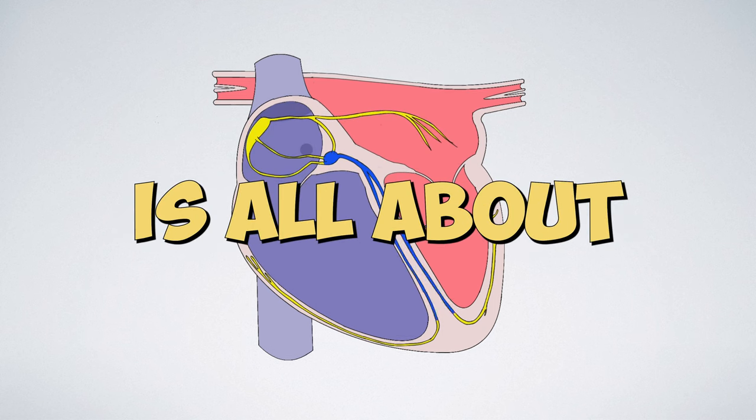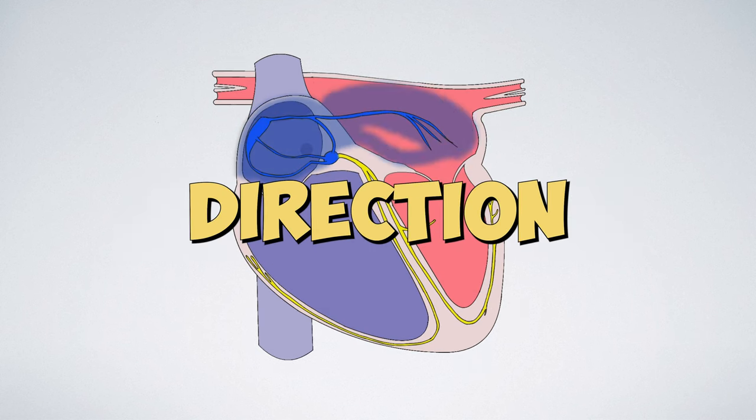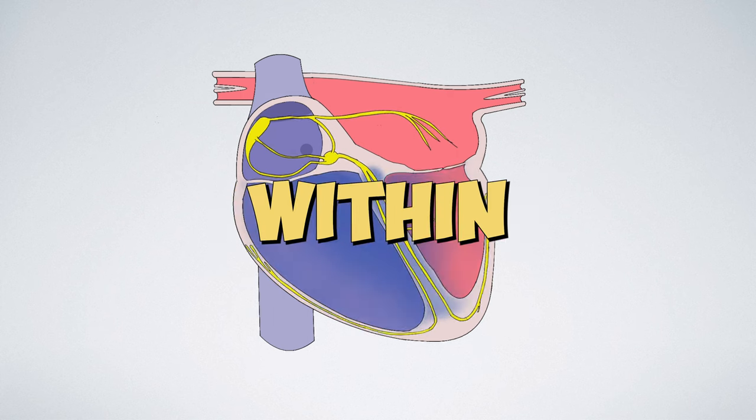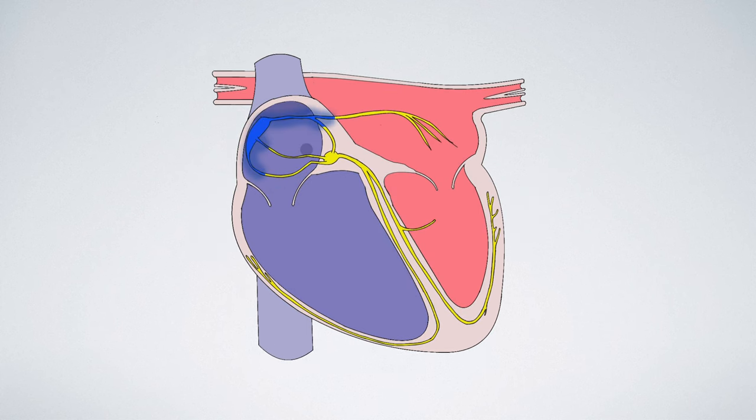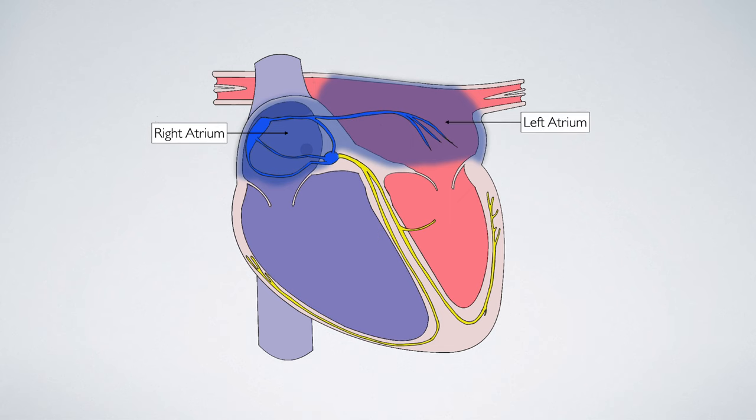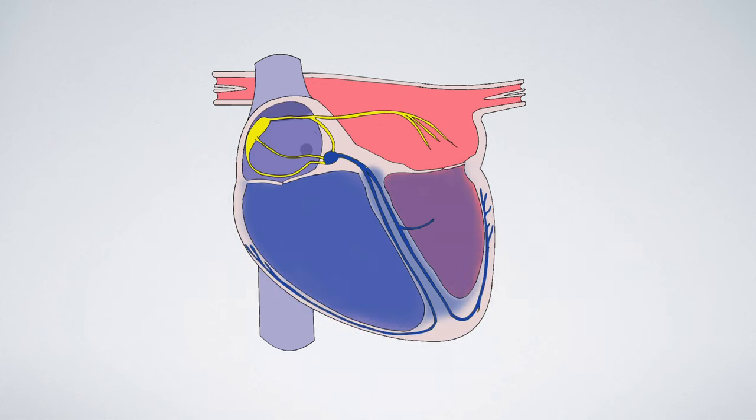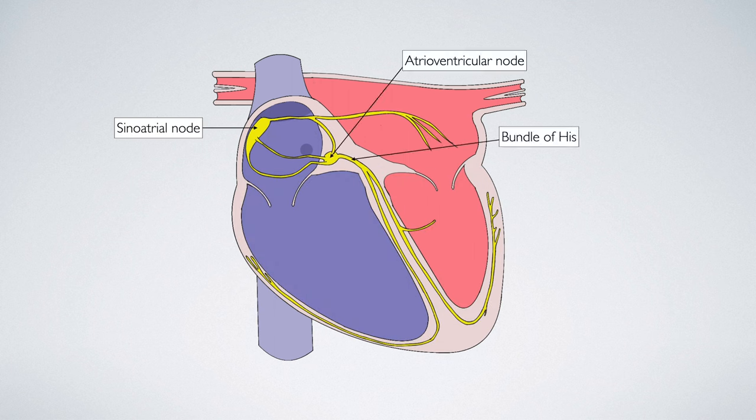Now the cardiac axis is all about measuring the mean direction of electrical activity within the heart. Picture this: under normal circumstances the electrical activity flows like a symphony through the chambers of the heart following its intricate electroconduction pathways.